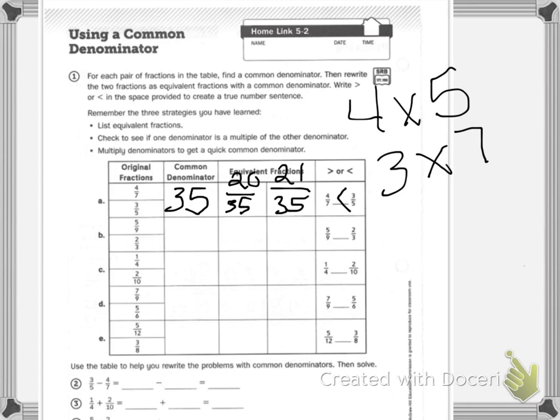Now let's try B together. It says 5 ninths and 2 thirds. If I list my multiples of 9, I'm going to change my color to red: 9, 18, 27. And then I have 3, 6, 9.